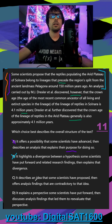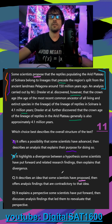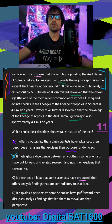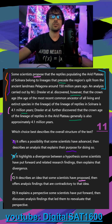In C, it describes an idea that some scientists have proposed — they propose that the lineage was older than 150 million years old — then offers analysis findings that are contradictory to that. They find out that the lineage is actually only 4.1 million years old. So C is check mark, check mark — it's going to be right.